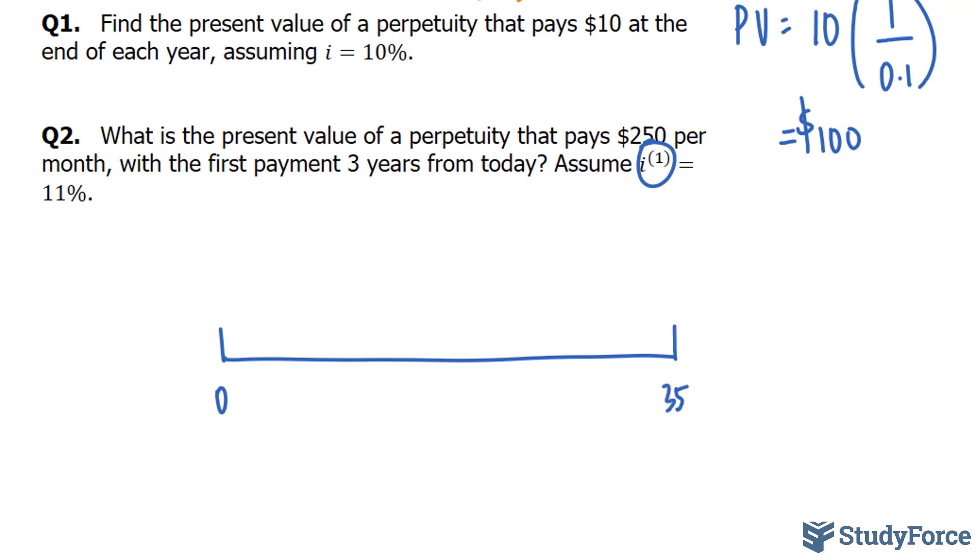Before we do any calculations involving perpetuities, let's go ahead and change 11%, which is compounded annually, into something that is compounded monthly. And so what we do is we first change this into a decimal, which is 0.11, and we use the formula, we've done this in previous videos, of 1 plus the interest, which is currently compounded annually. So you divide it by 1. You don't need to show that. And you raise it to the power of 1, which you don't need to show either.